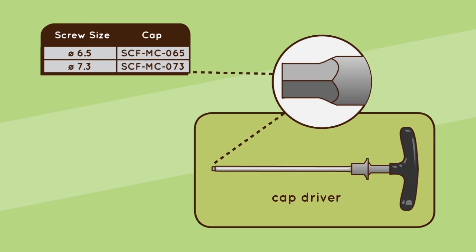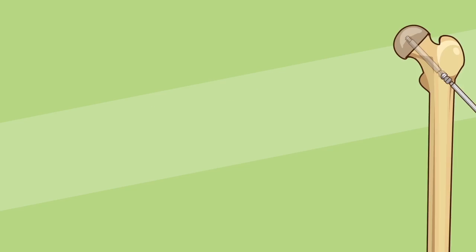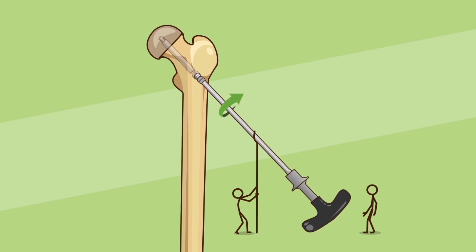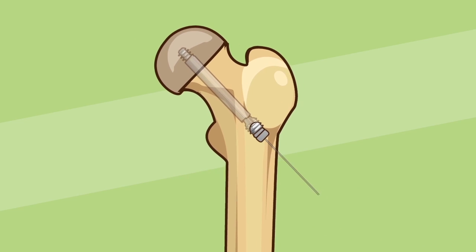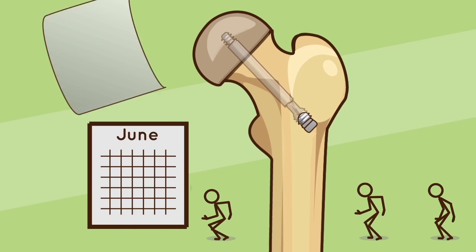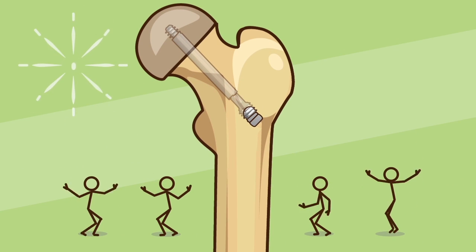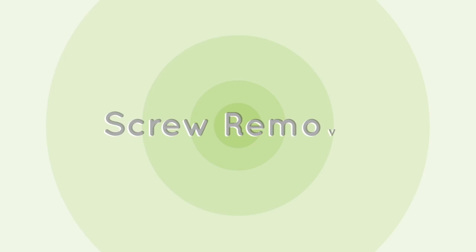Screw Removal: Guide wire insertion - Under C-arm visualization, insert the guide wire through the implant's cannulation.